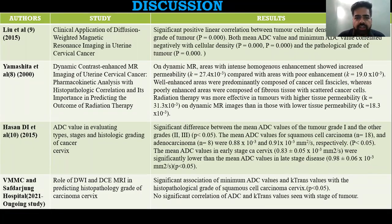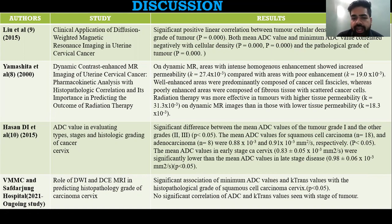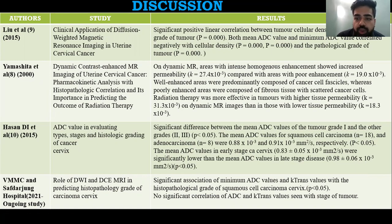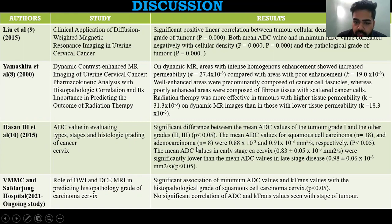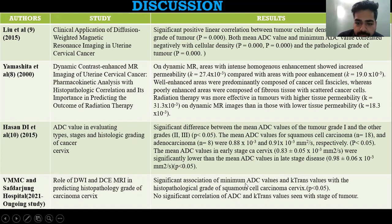Discussing previous studies: Liu et al. showed a significant positive linear correlation between tumor cellular density and grade of tumor; both mean and minimum ADC values were correlated negatively with cellular density and pathological grade of tumor. Yamashita showed that on dynamic MRI, areas of intense homogeneous enhancement showed increased permeability and increased K-trans; these areas were predominantly composed of cancer cell vesicles and radiation therapy was more effective in tumors with higher permeability. A study showed significant difference between mean ADC values across different tumor grades. The present study at VMMC's Satyajam Hospital showed significant association of minimum ADC value and K-trans value with histopathological grade of cervical cancer, with no significant correlation seen with stage of tumor.